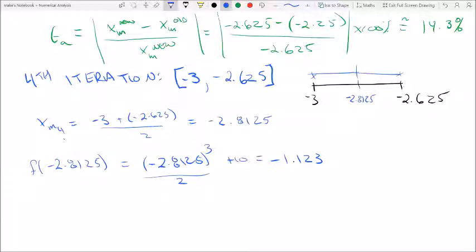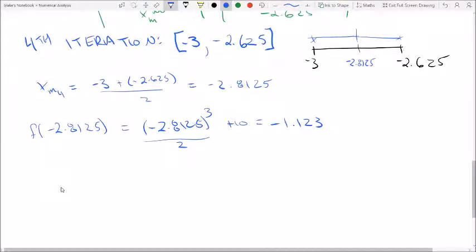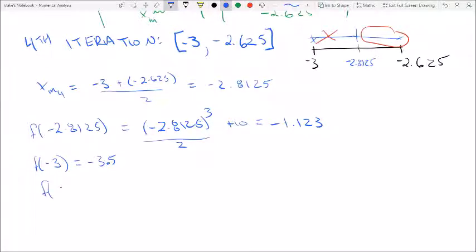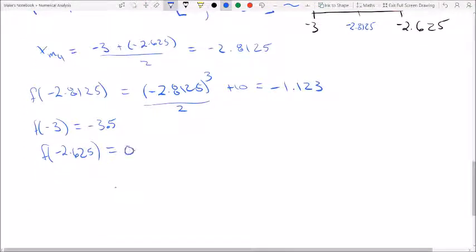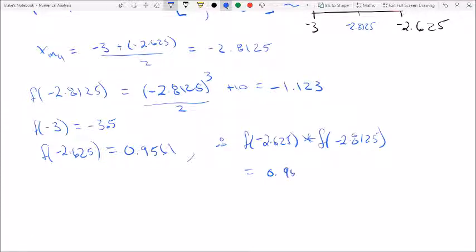So now we've got a negative value. So that is interesting because if you remember our function at -3 is equal to -3.5. So now we know that it can't be in this interval. It has to be in this interval. Let's just double check. So if you recall the value at -2.625 is 0.9561. Therefore if we have 0.9561 times -1.123, which is less than 0, so that's good. So that's confirmed that it's going to be on the right-hand side of our interval.